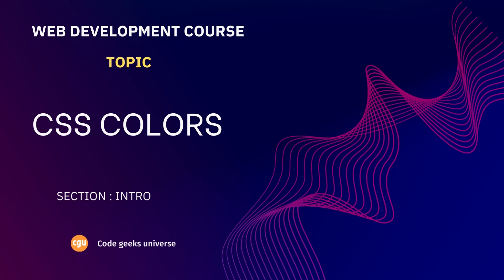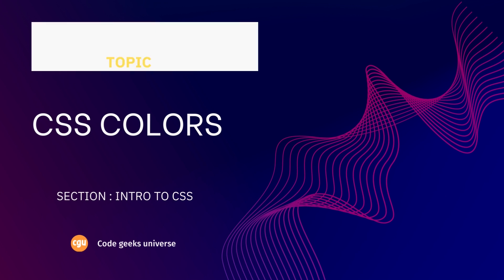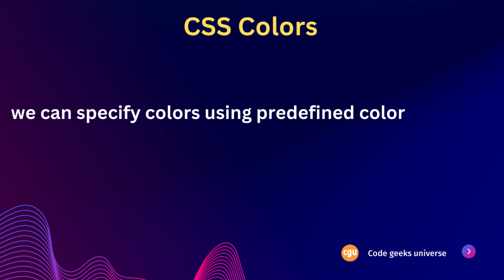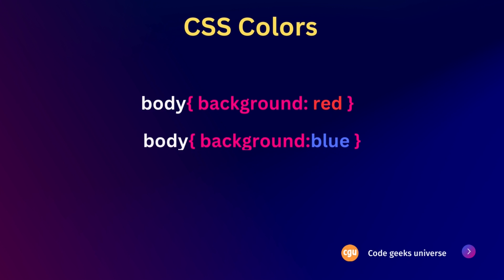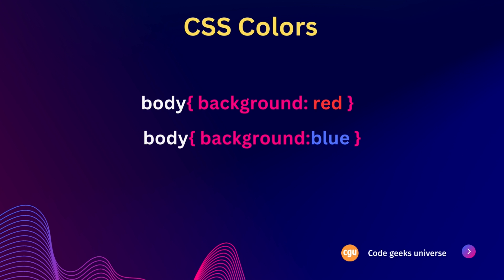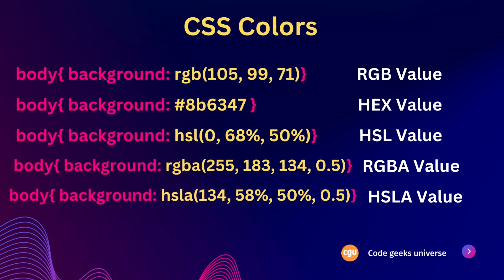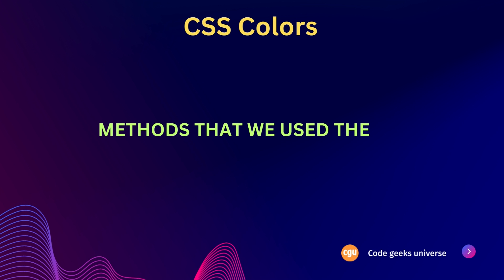Hi everyone, in this video we are going to learn about CSS colors. In web development and design, colors can be specified in multiple ways. Another approach is to utilize RGB, hex, HSL, RGBA, or HSLA values. These different formats allow for more precise control over color selection and customization.